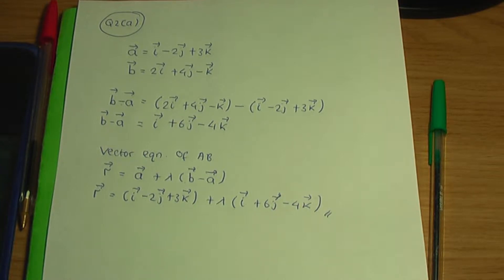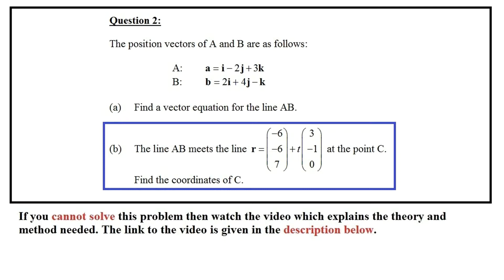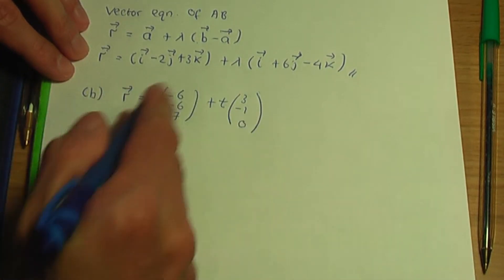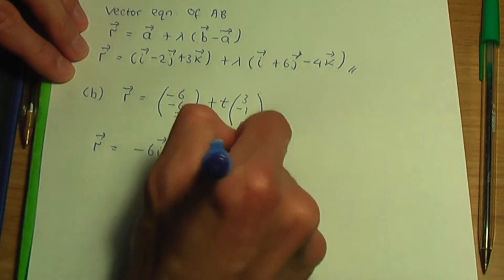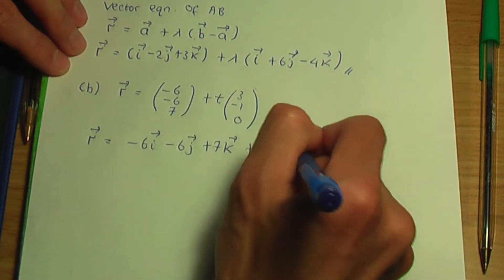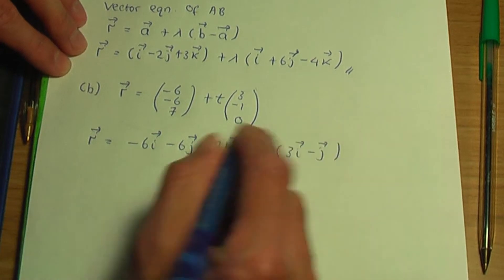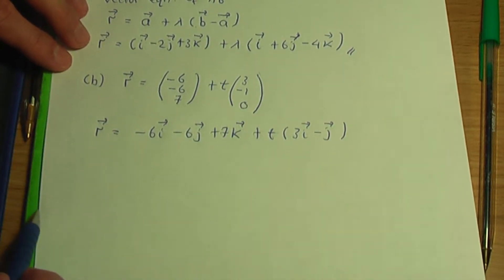We have another part to do. In part b, the line AB meets the line r equals, in column vector form, minus 6, minus 6, 7 plus t times 3, minus 1, 0 at the point c. We need to find the coordinates of c — in other words, the point of intersection of these lines. Let me rewrite this in i, j, k form: vector r equals minus 6i minus 6j plus 7k plus t times (3i minus j plus 0k). So both equations are now in i, j, k form.